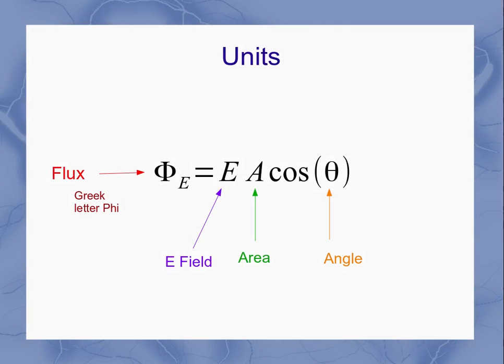Now if I want to take a look at the units for these quantities, let's start with the ones we already know. Electric field has units of newtons per coulomb. Area has units of meters squared. Your angle is going to be degrees or radians, but once you take the cosine of the angle it doesn't contribute any units anymore.